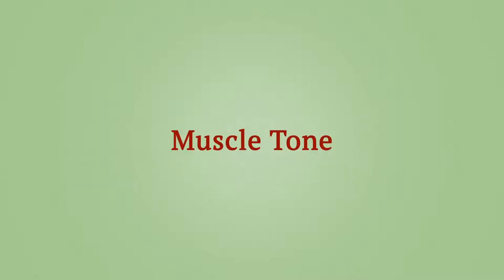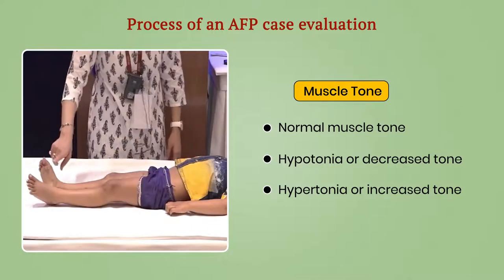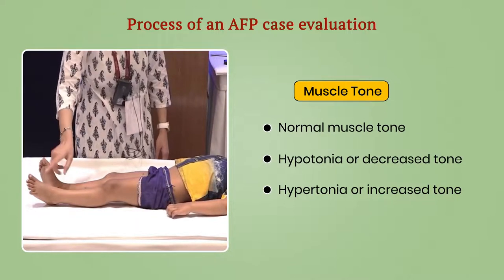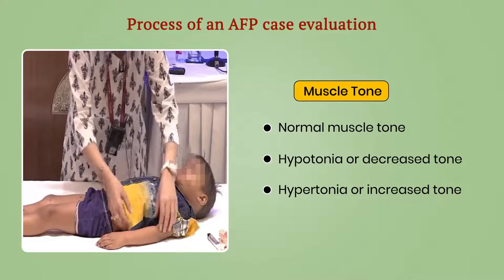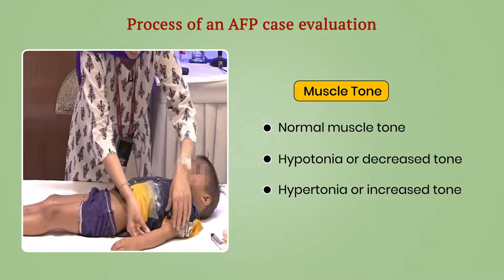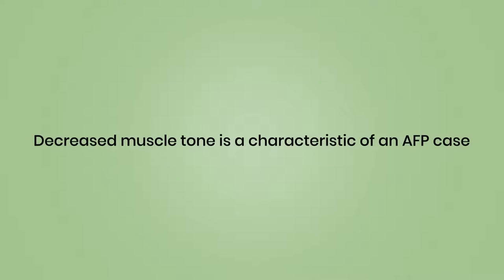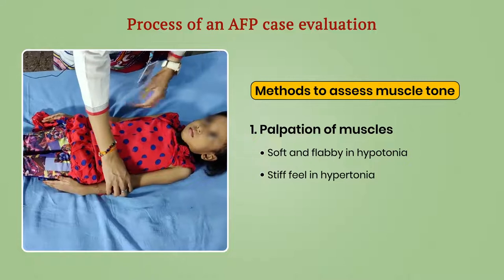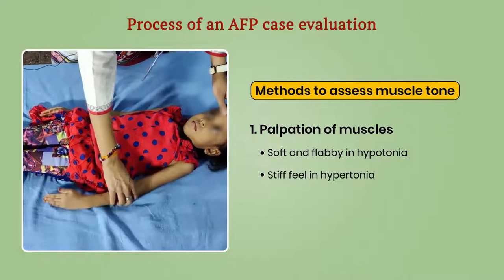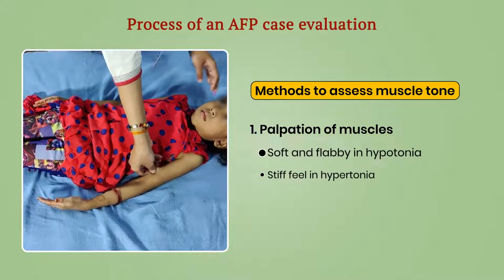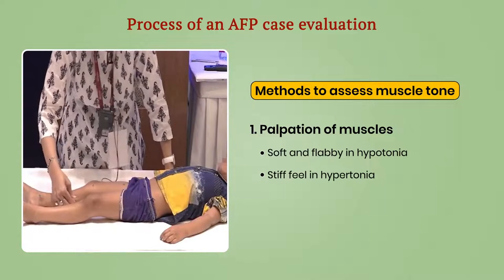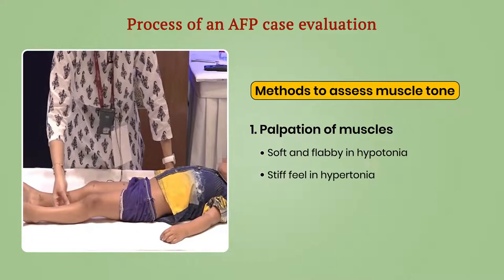Muscle tone can be graded into normal, hypotonia or decreased tone, and hypertonia or increased tone. Decreased muscle tone is characteristic of an AFP case. Methods to assess muscle tone include palpation of muscles — soft and flabby in hypotonia, while stiff in hypertonia.